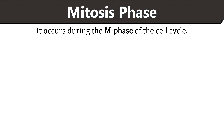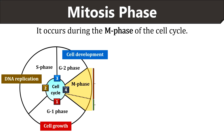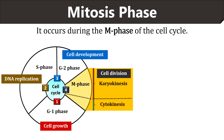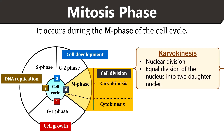Now let us study the mitosis phase in the cell cycle. In this diagram of the cell cycle, the portion highlighted in yellow indicates the M phase or mitosis phase. It is a process of cell division that occurs between the G2 interphase of cell development and the G1 phase of cell growth. M phase is divided into two stages: karyokinesis is the first stage and cytokinesis is the second stage. Karyokinesis is the process of nuclear division in which duplicated chromosomes are segregated into daughter nuclei.